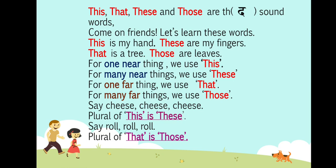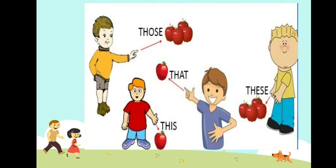Let me explain by taking some examples. A boy in a red t-shirt is pointing towards an apple which is near to him — in this case, we use the word 'this'. A boy in a grey t-shirt is pointing towards an apple which is far from him, so the word 'that' is used. A boy with a yellow t-shirt and blue pants is pointing towards apples which are near to him, so the word 'these' is used. And a boy with a yellow t-shirt and shorts is pointing towards four apples which are far away, so the word 'those' is used.